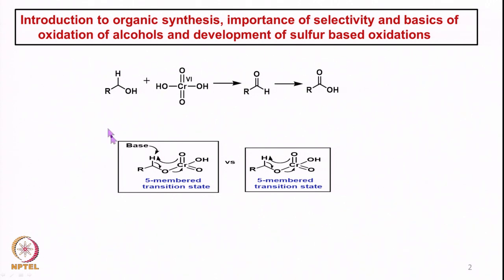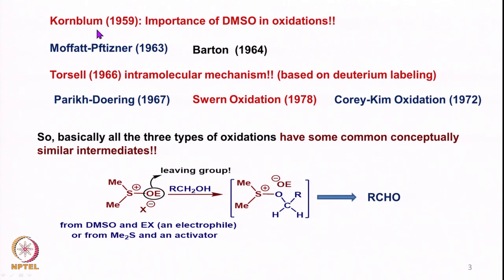Initially we saw chromium-based oxidations, and then we considered the two possibilities: oxidation in an intermolecular fashion or an intramolecular fashion via a 5-membered transition state. Then we looked at Kornblum-type oxidation, and then DMSO-activated oxidations like Moffatt-Pfitzner and Barton-type oxidations. We also discussed the isotope studies which allowed us to establish the intramolecular mechanism based on deuterium labeling.